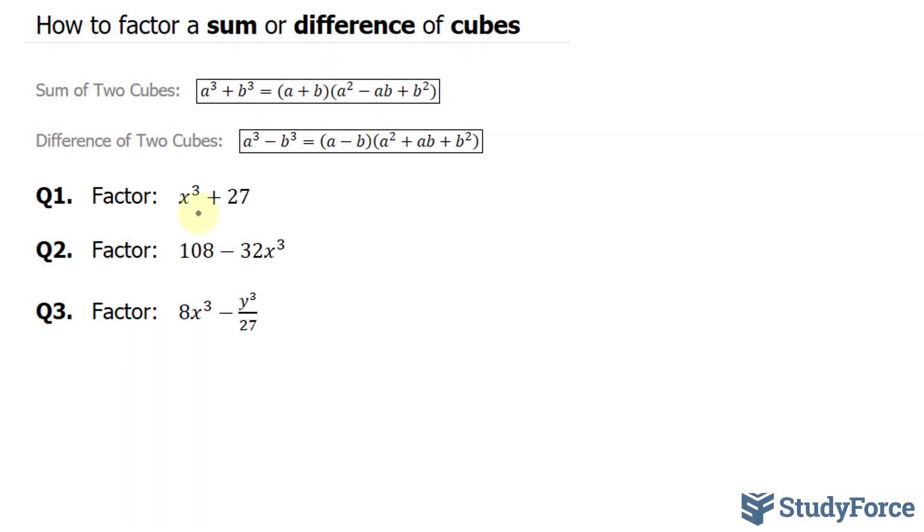The first thing that you have to do is test whether these two terms are perfect cubes. So let's start with x to the power of 3 and cube root that. The cube root of x to the power of 3 is simply x. Therefore, this term is a perfect cube.